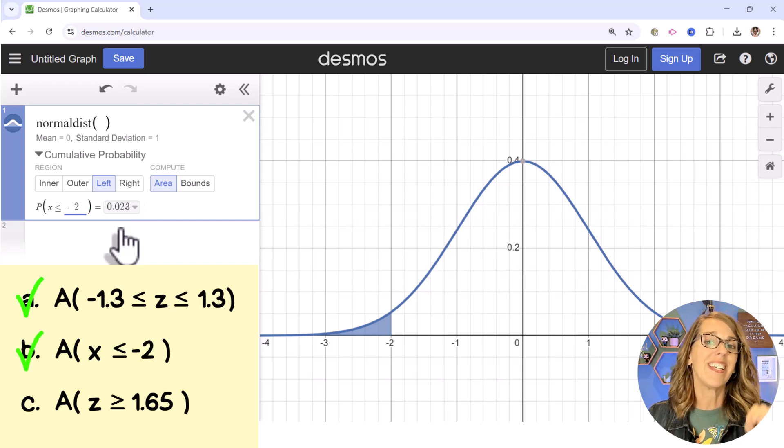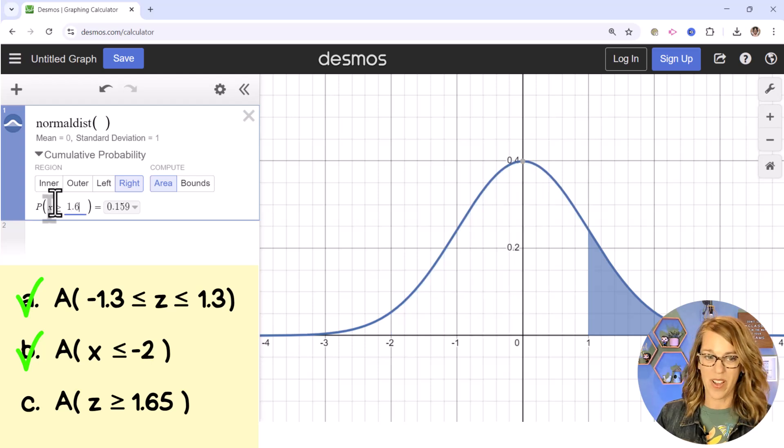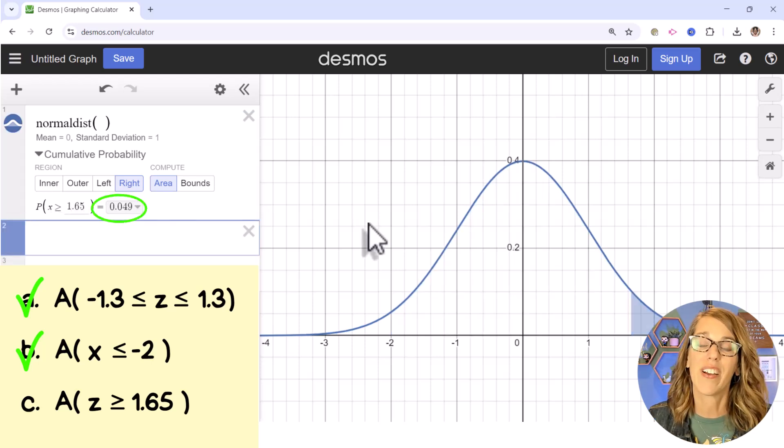Finally, we want an area where z is greater than or equal to 1.65. That's going to be an area on the right. And I change that to 1.65 for an area of 0.049.